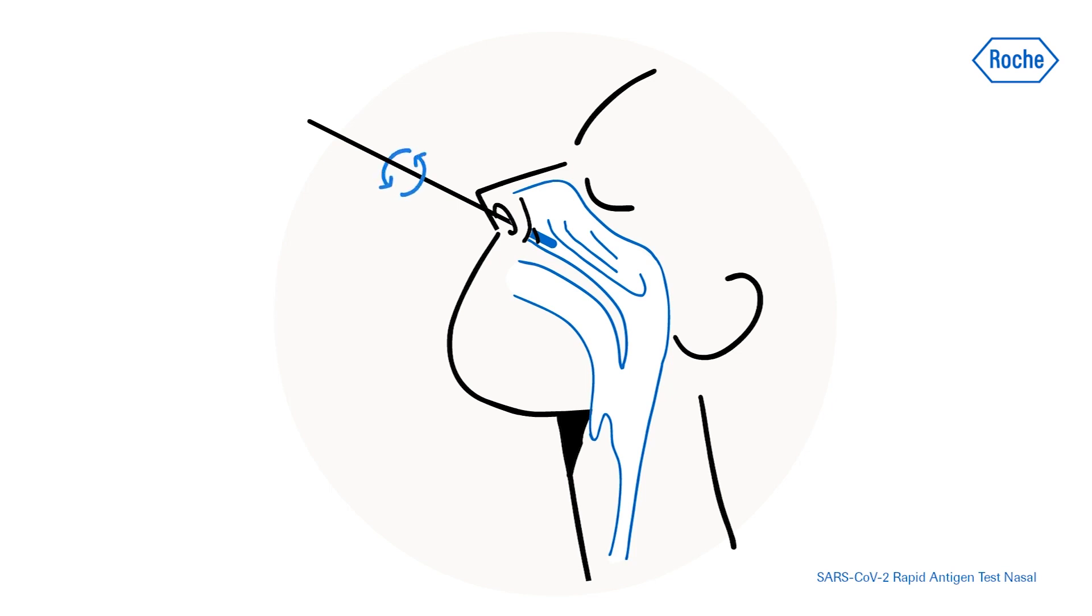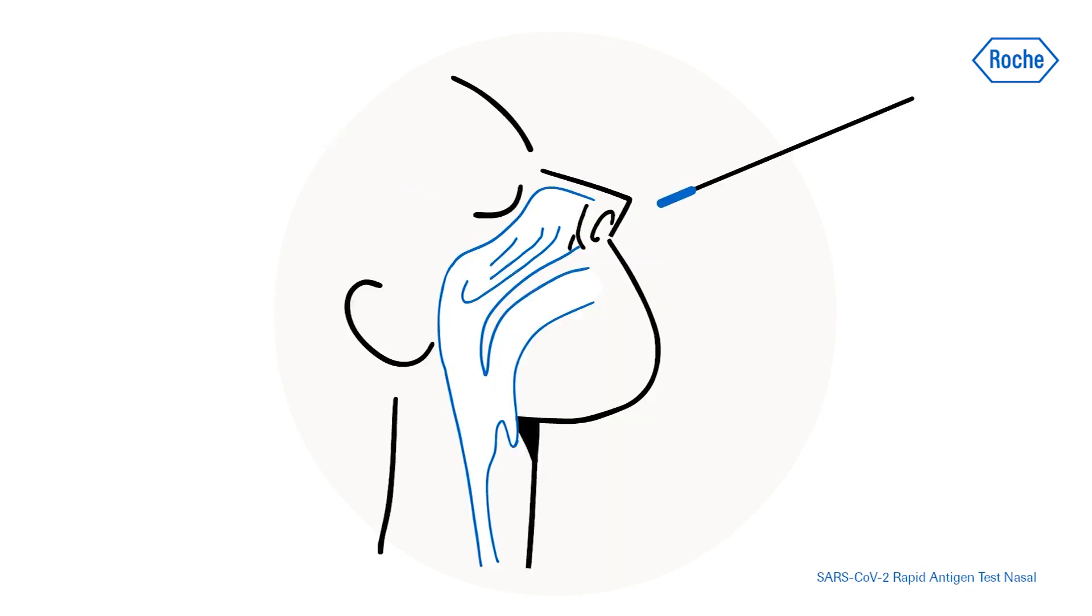Slowly rotate the swab in a circular path against the nasal wall at least four times for a minimum of 15 seconds. Repeat this with the same swab in the other nostril.